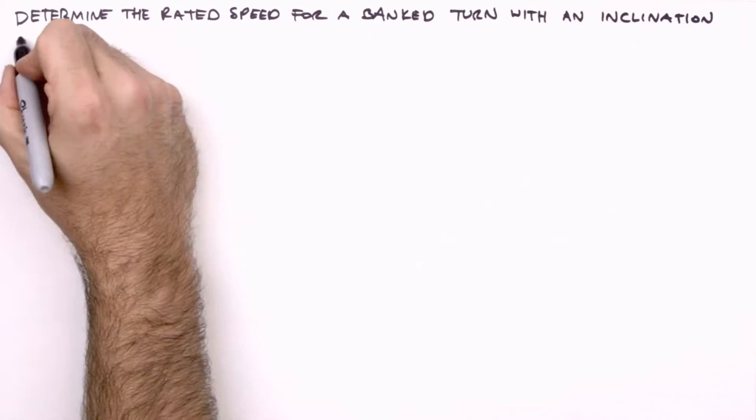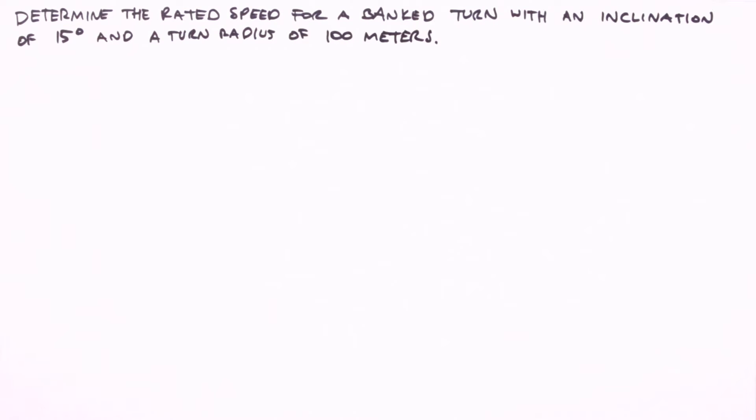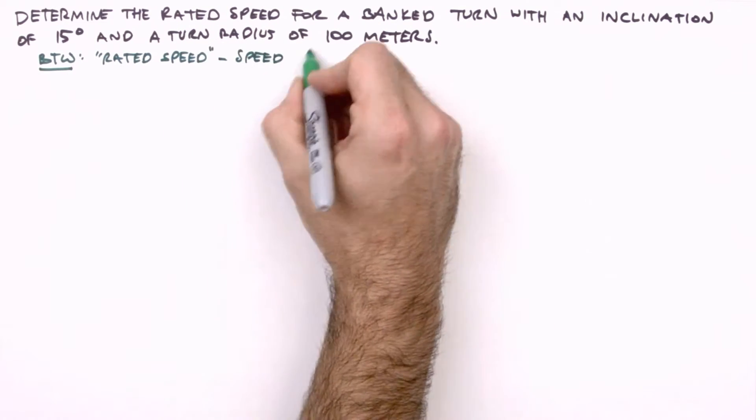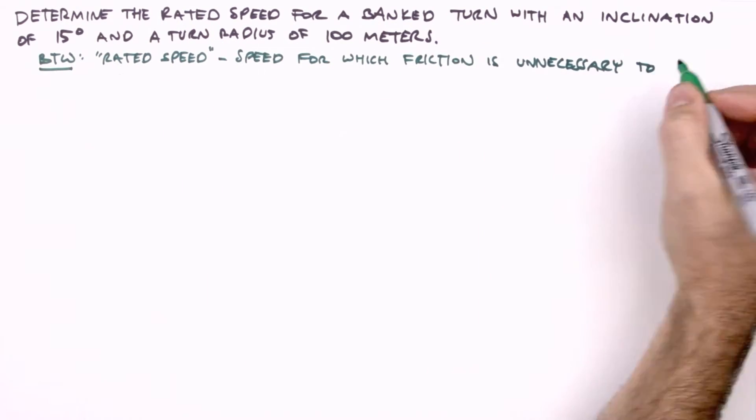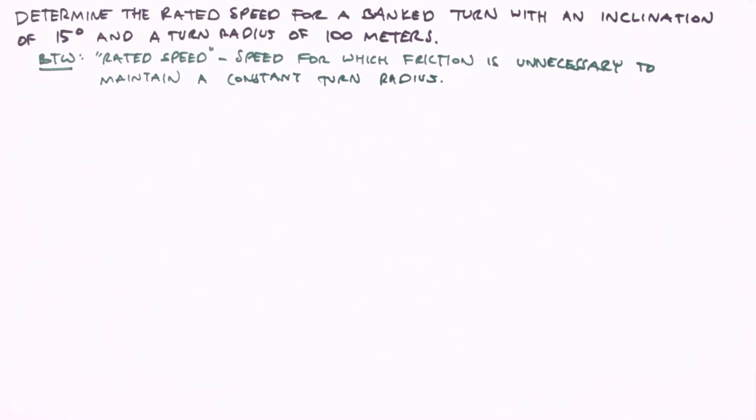Here we're given both the inclination and the radius of the turn. Armed with these two pieces of information and a little physics, we're going to determine the rated speed for this turn. The rated speed, by the way, is the speed for which friction is unnecessary to maintain a constant turn radius. In other words, if a vehicle hits a patch of ice at this speed, it will not slide off the road, but rather remain on the intended path.